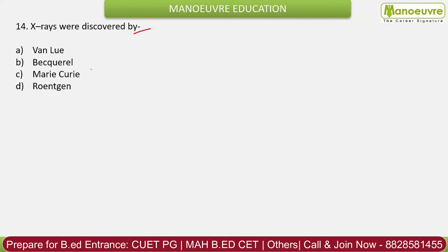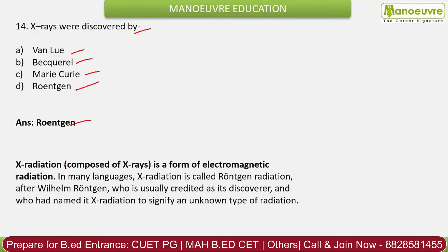Question 14: X-rays were discovered by? Options: Henri Becquerel, Marconi, Roentgen. The correct answer is Roentgen. X-radiation is a form of electromagnetic radiation. In many languages, X-ray radiation is called Roentgen radiation, named after its discoverer.